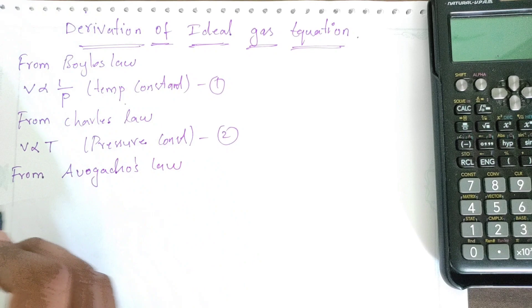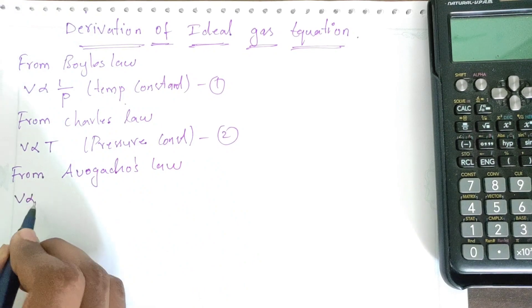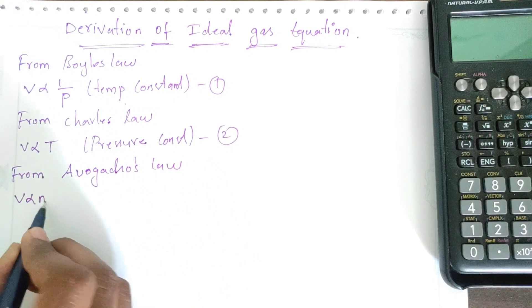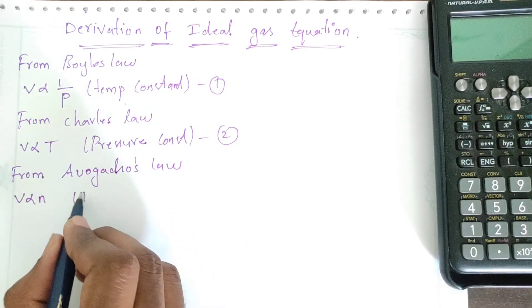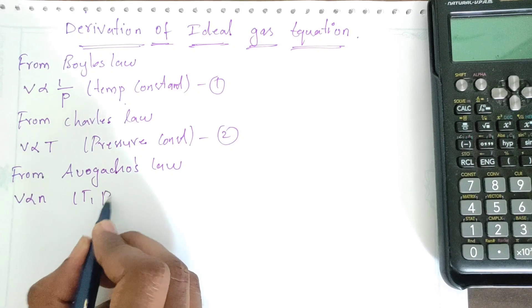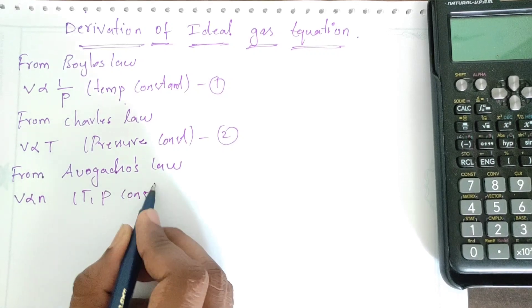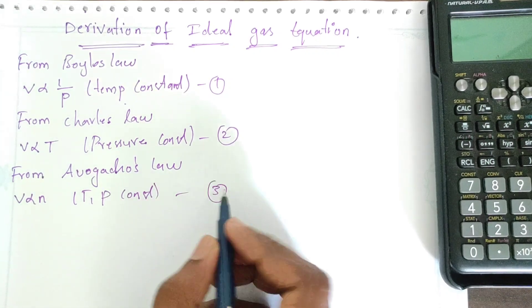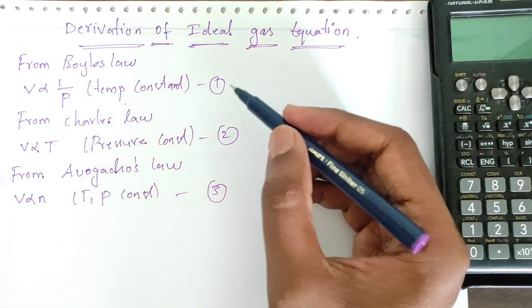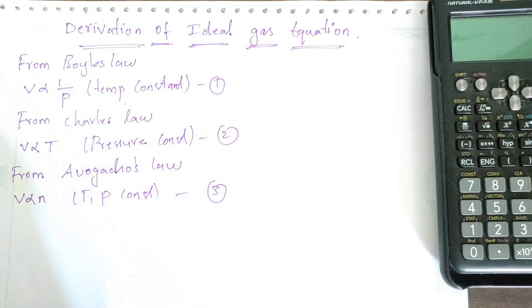From Avogadro's law, the volume of a given gas is directly proportional to the number of moles, keeping temperature and pressure constant. So these are the three laws we will now combine.